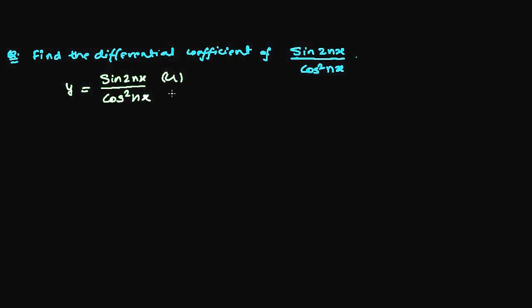Now you can imagine this as a function u and another function v and use the quotient rule, but don't hurry. You can solve it even to a simpler value because sine 2nx - you can use the sine 2 theta formula here, and here is cos square nx, so one cos will cancel with the numerator.